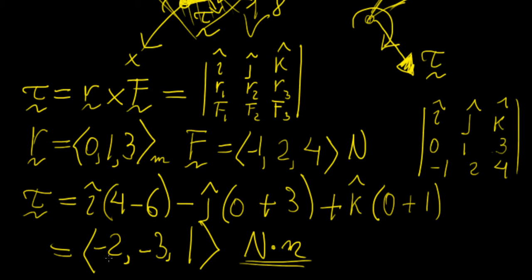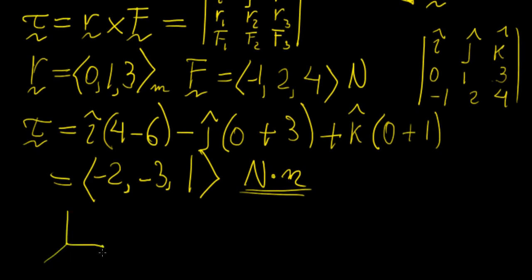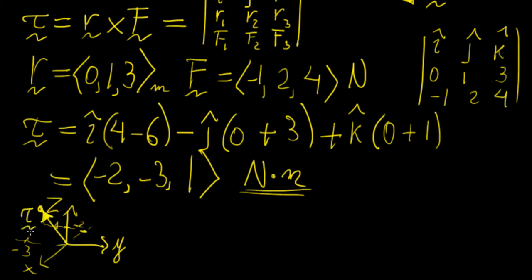If we draw this on the x, y, z plane: we go minus two in the x direction, minus three in the y direction, and one in the z direction, ending up at a point at the back. Our torque vector points from the origin to that point. Using the right-hand rule, pointing your thumb in that direction, your fingers curl to give the direction of rotation.